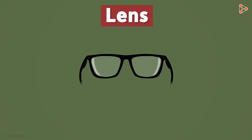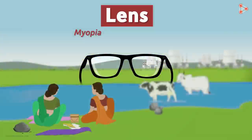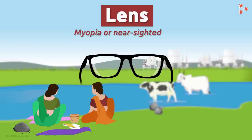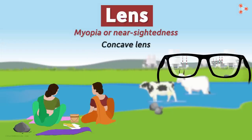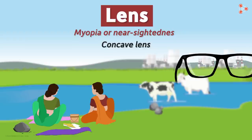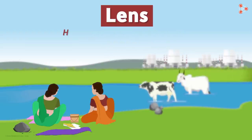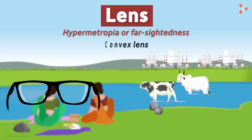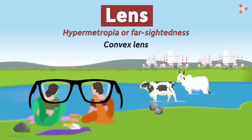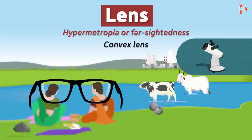If one is suffering from myopia or nearsightedness, we wear spectacles with concave lenses. And if one is suffering from hypermetropia or farsightedness, we wear spectacles with convex lenses. Lenses are also used in telescopes and cameras.